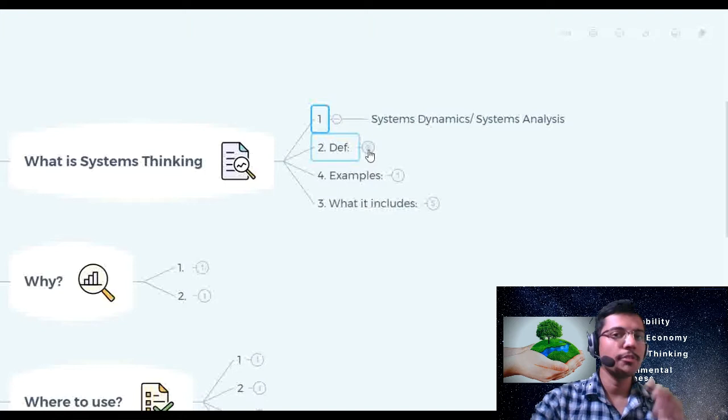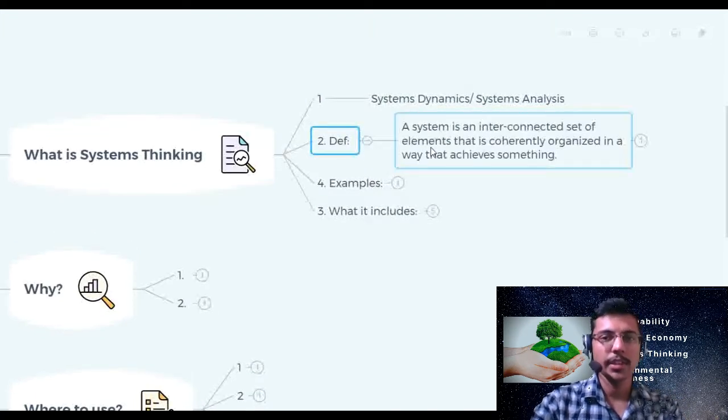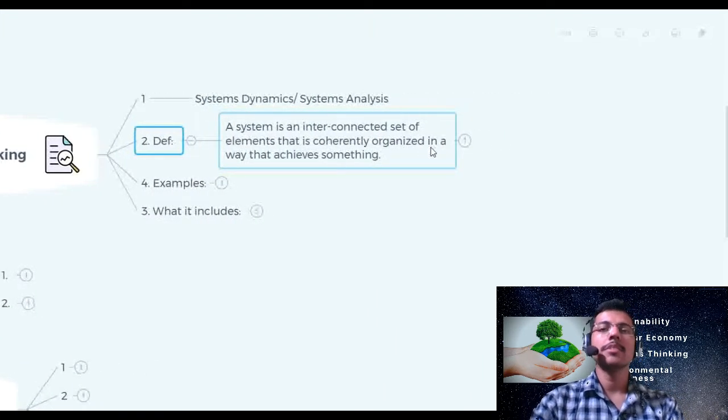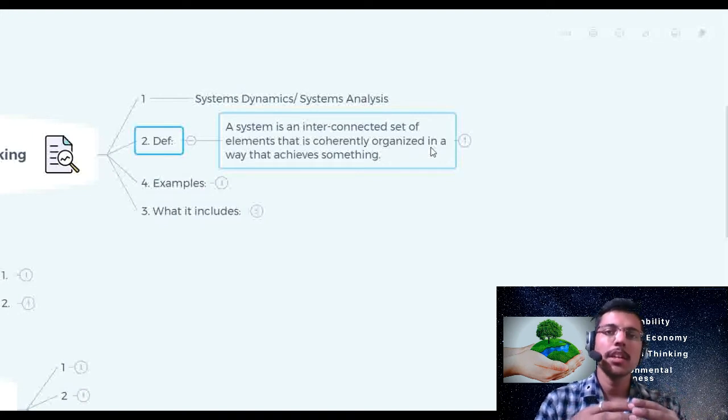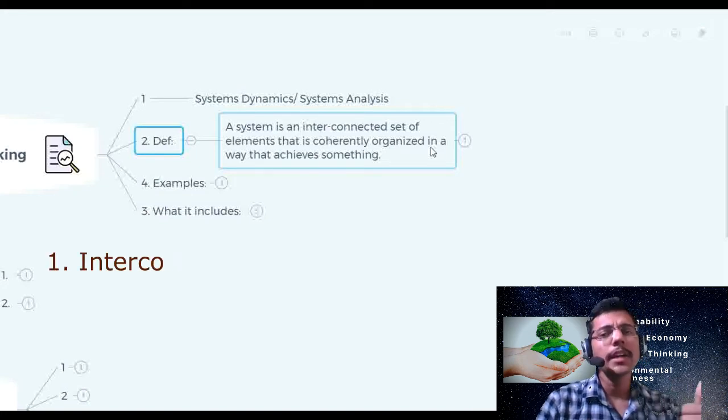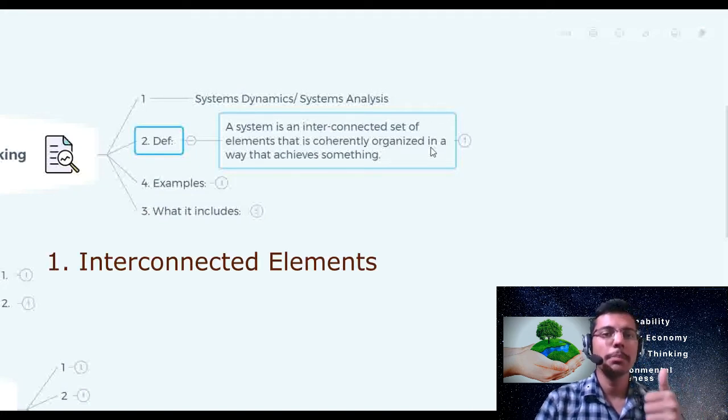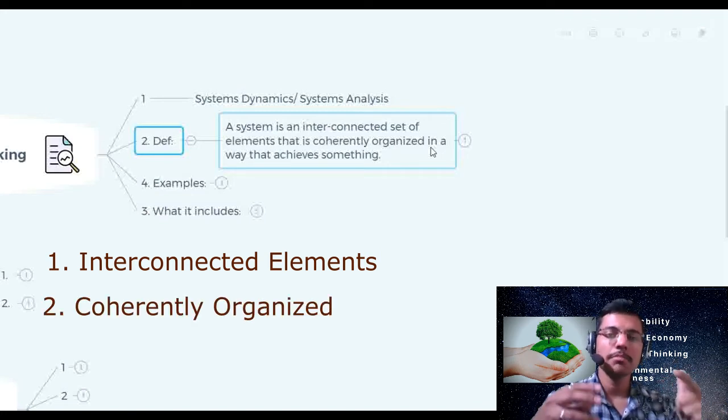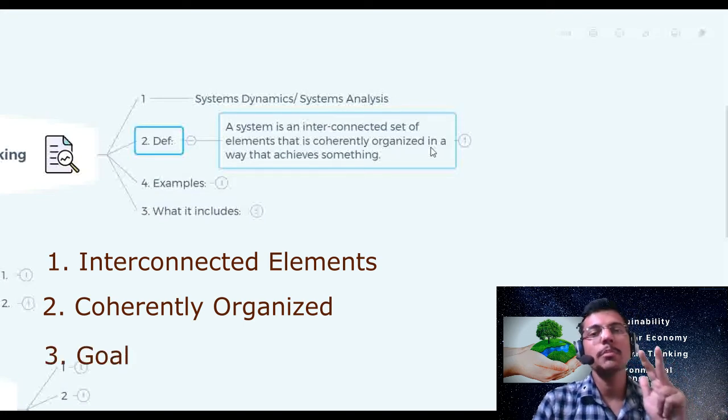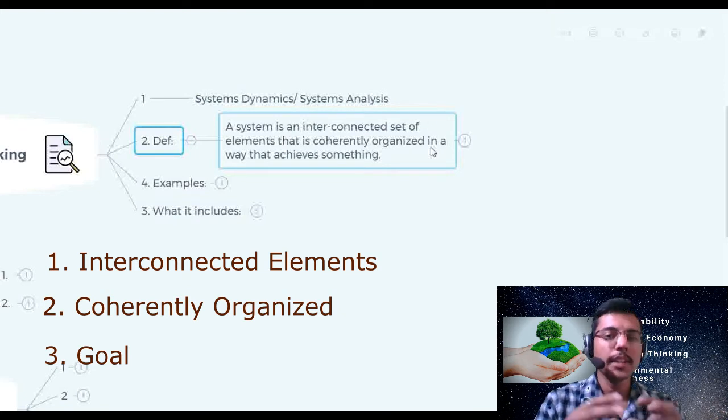Let's see what is the definition of system before delving deeper into systems thinking. A system is an interconnected set of elements that is coherently organized in a way that achieves something. In this system there are three important parts that we can identify. First is interconnected elements. There are multiple elements in a system. Second, they are coherently organized, means there is some sort of organization between them and that achieves something. So there is some goal for the system and if anything that fulfills these three requirements, we can call it a system.